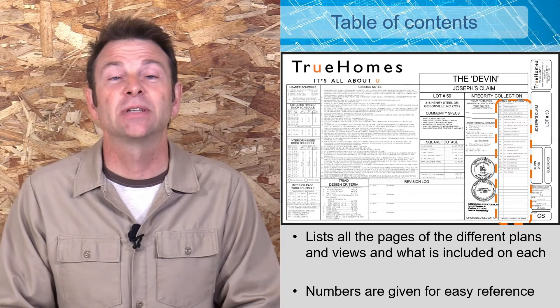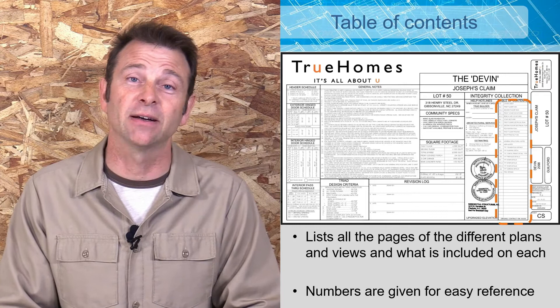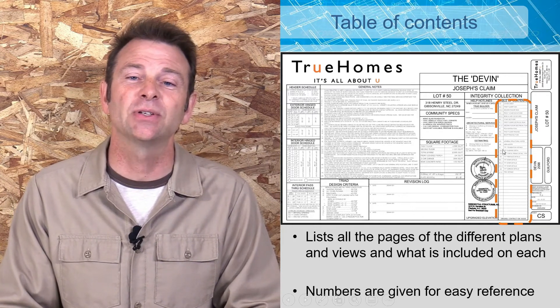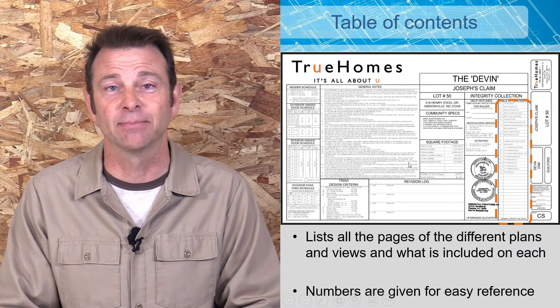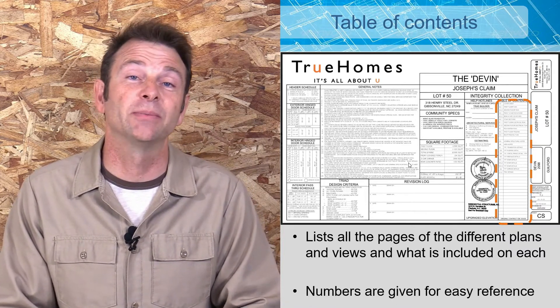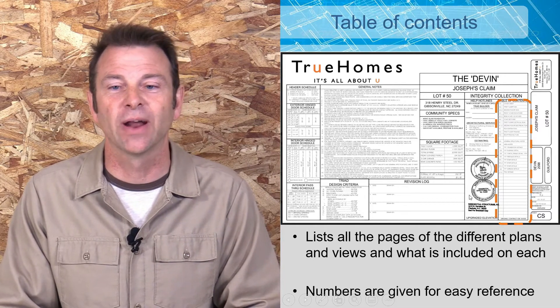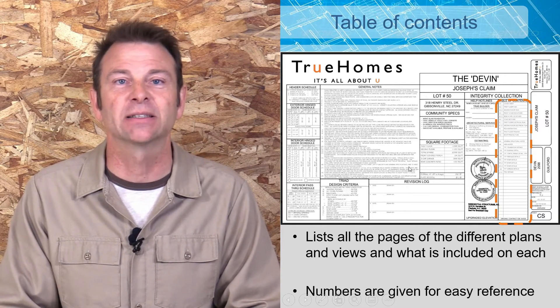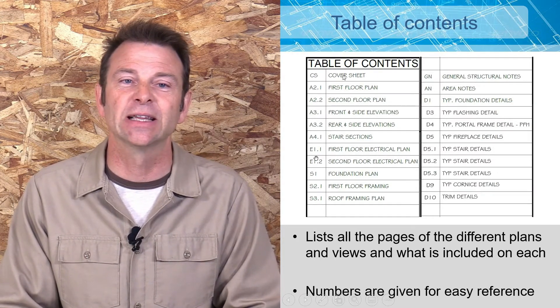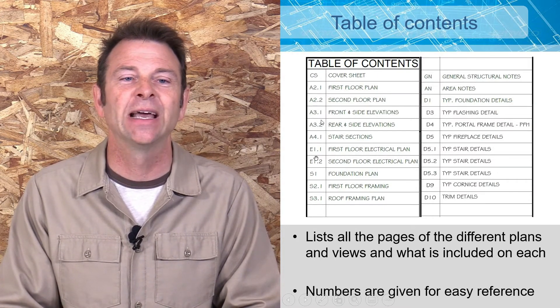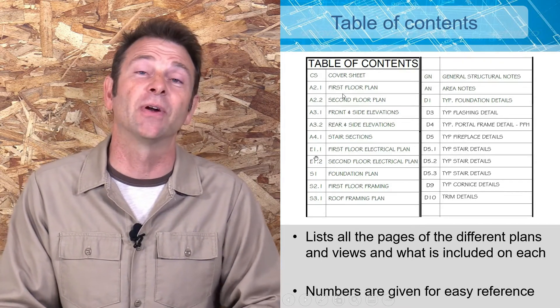Here is your table of contents. We talked about your sheet number. Your table of contents is going to be like chapters in a book. This should be on your cover sheet, on the very beginning page, and it's going to reference all of those different pages that are in this set of prints and what should be included on each one. There are numbers that are going to reference this title block sheet number down here at the bottom.